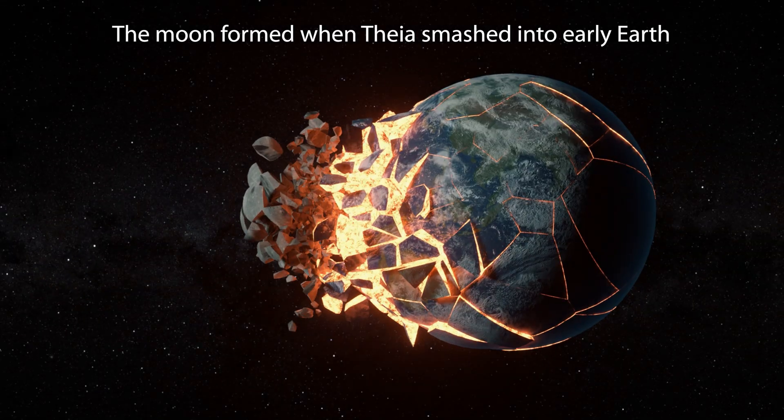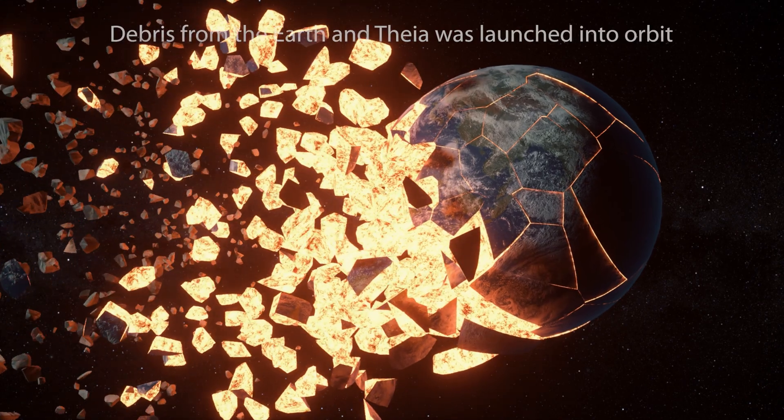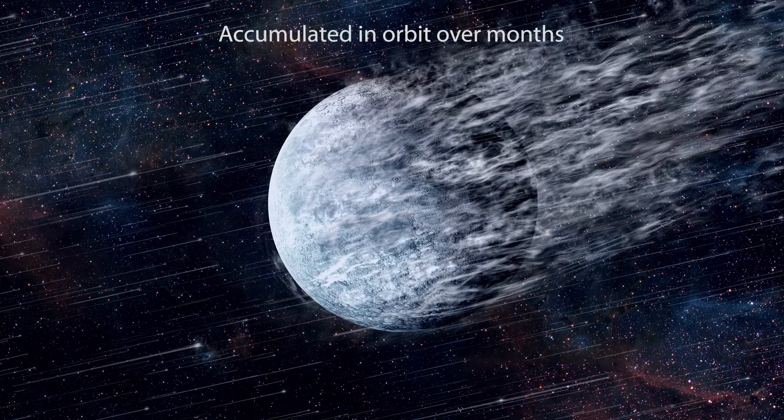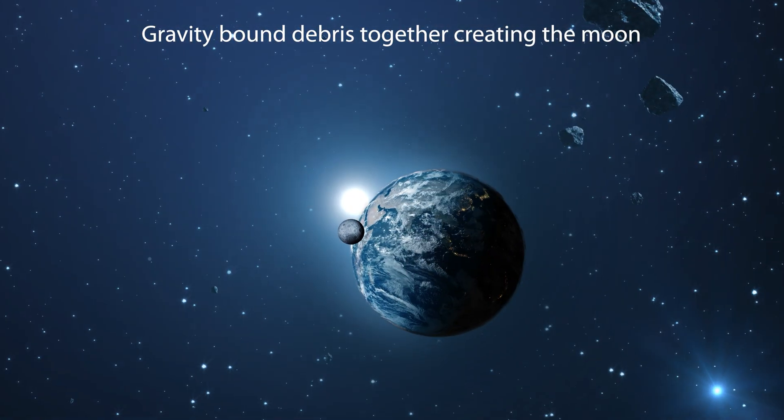The moon formed when Thea smashed into Earth 4.5 billion years ago. Debris from Earth and Thea was launched into orbit. And the debris accumulated in orbit over months. Then gravity bound the debris together creating the moon.